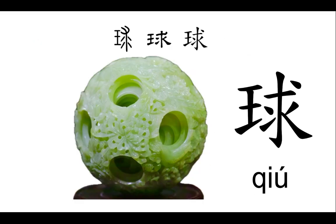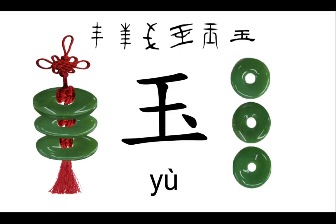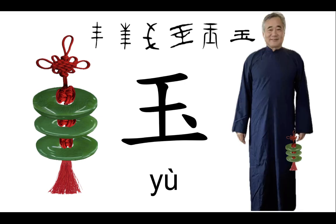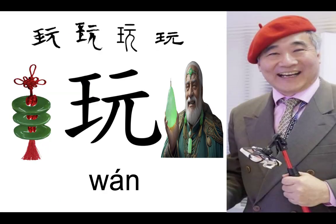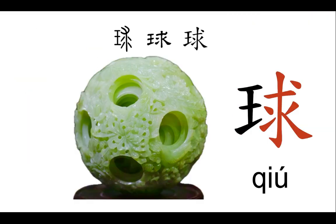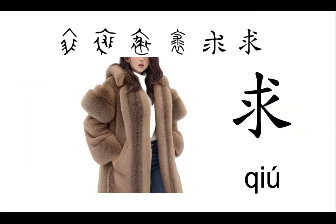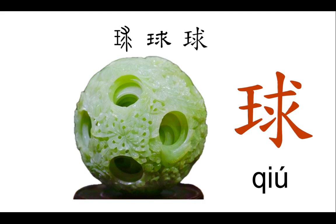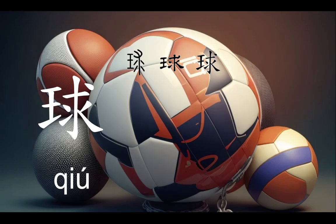When writing qiú, start with the yù radical for jade. Back in the day, people would string three jade pendants together on a rope and wear them as fancy accessories. When these jades bumped into each other, they'd make a nice sound, but if you were too rough, they'd break. The ancients used this to remind themselves to be chill and graceful. We already talked about this yù radical when we covered the character wán (play). Now, put yù together with qiú — furry fur — and you get qiú, which describes round things and also stands for all kinds of sports balls.